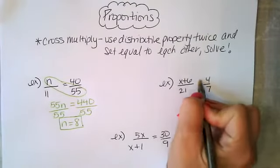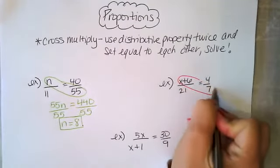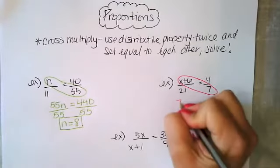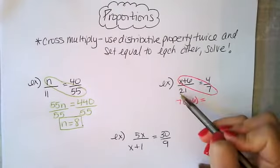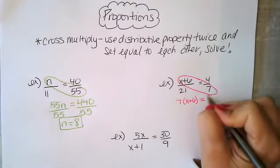I find the variable, which in this case is on the top left. So we're going to multiply our 7 by x plus 6 first, and then 21 times 4, which gives me 84.